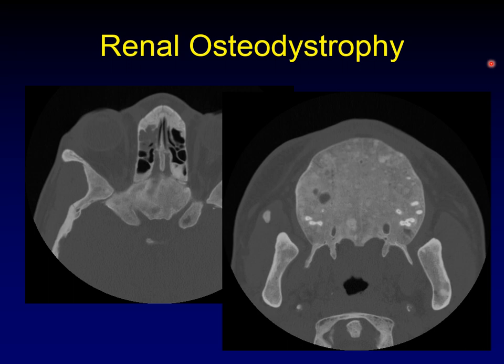Renal osteodystrophy famously produces the same ground glass appearance and expansion of bone that we can see in fibrous dysplasia. The key for renal osteodystrophy is that it is diffuse and symmetric — it's a metabolic lesion, not a focal lesion like fibrous dysplasia. Fibrous dysplasia can be very extensive, but it is rarely symmetric and diffuse like renal osteodystrophy.